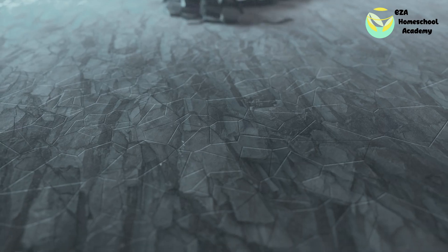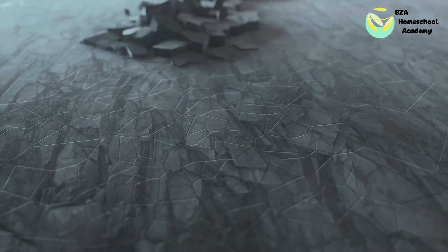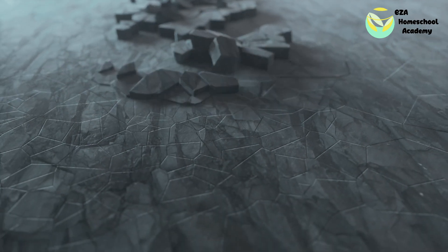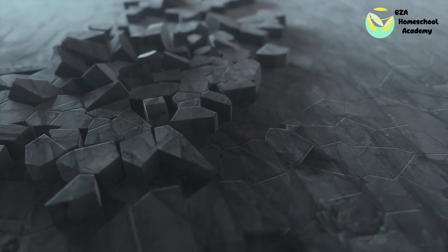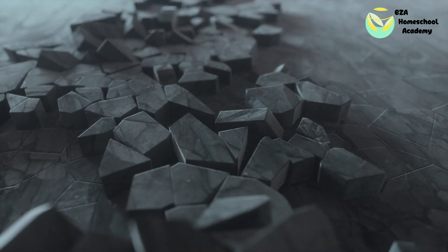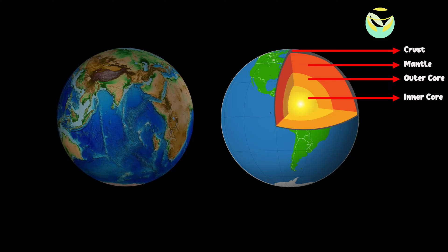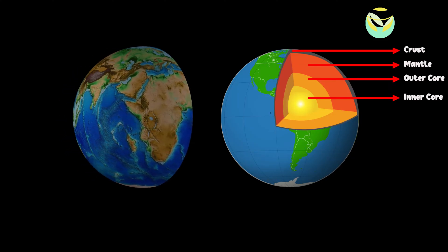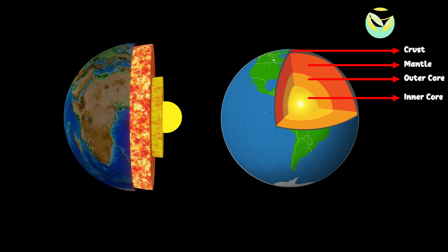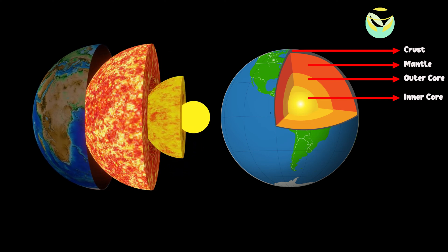An earthquake is a powerful shaking of Earth's surface — the crust. The shaking is caused by movements and pressure in Earth's outer core. The non-stop movement in the outer core causes stress on the Earth's crust. When the stressors get too much, it leads to cracks in the crust called faults.